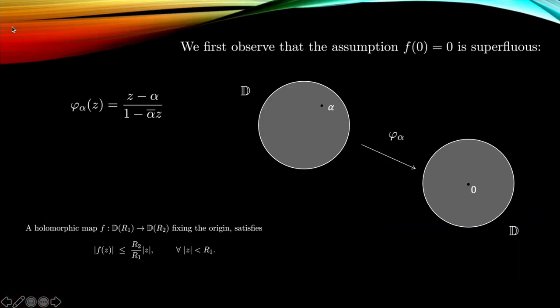The first thing to observe, as observed by Pick, was that the assumption that f(0) = 0—that it fixes the origin—is actually unnecessary to assume. Suppose that f maps the origin to some non-zero point in the disc. Then what we can do is use a Möbius transformation, which is given here as a fractional linear transformation, to essentially put that image back. If I have a point α in the unit disc, I can map it back to the origin exactly by this map.